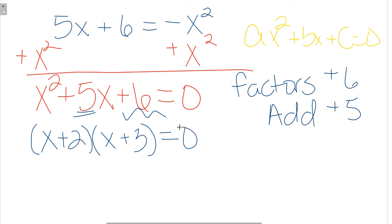x plus 2 times x plus 3 equals 0. Now remember, if these two things multiply to give me 0, then one or more of them equal 0. So we solve by saying, x plus 2 equals 0, x plus 3 equals 0. And we see that x equals negative 2 and x equals negative 3.